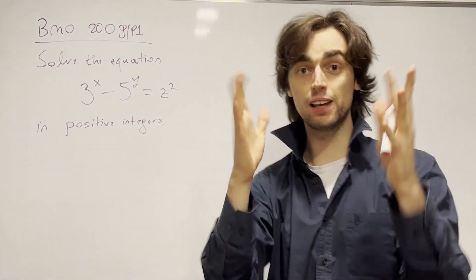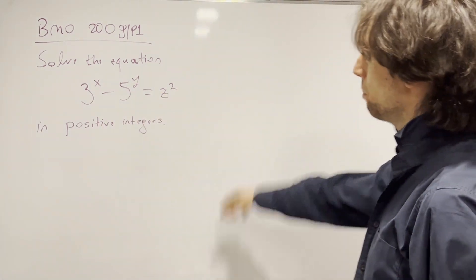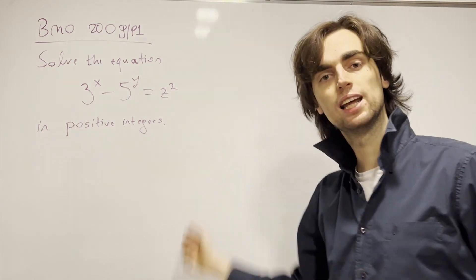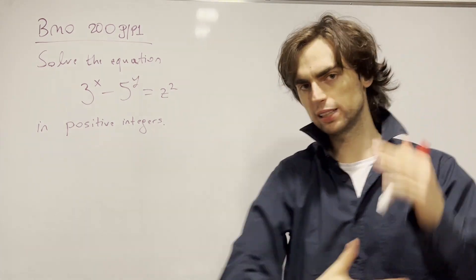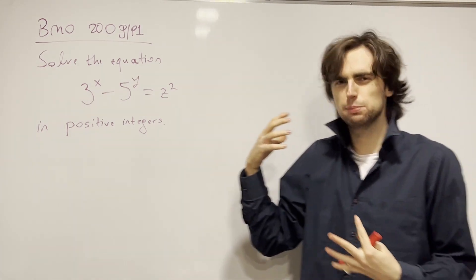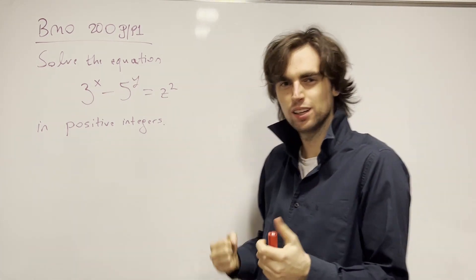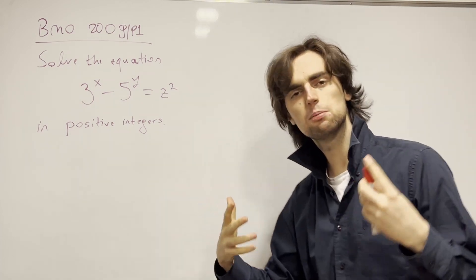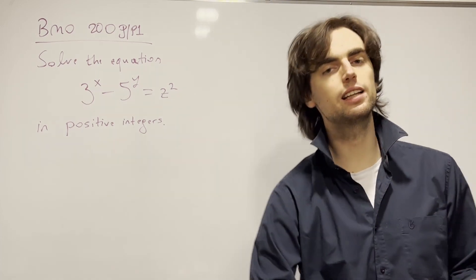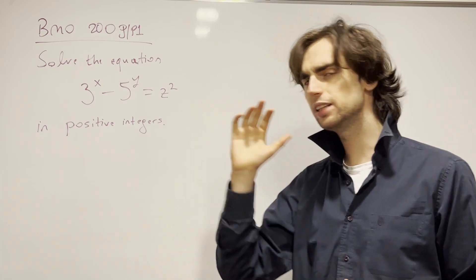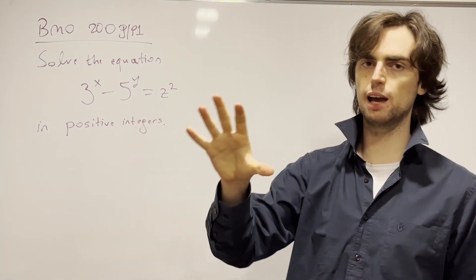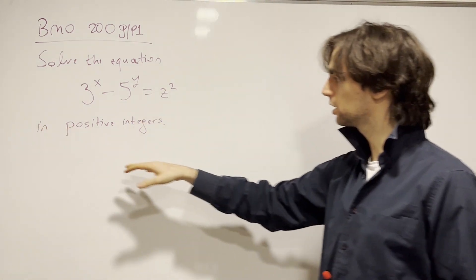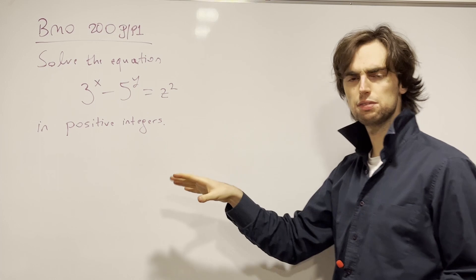Hello fellow problem solvers. Today we're doing a problem from the Balkan Math Olympiad 2009, problem number one. I suggest you try to solve this number theory problem, which is a bit technical in nature, for the next 30 minutes at minimum — ideally an hour, an hour and a half, not more than two and a half hours. If you'd like to go along with us, give it a go for the next 15 minutes.